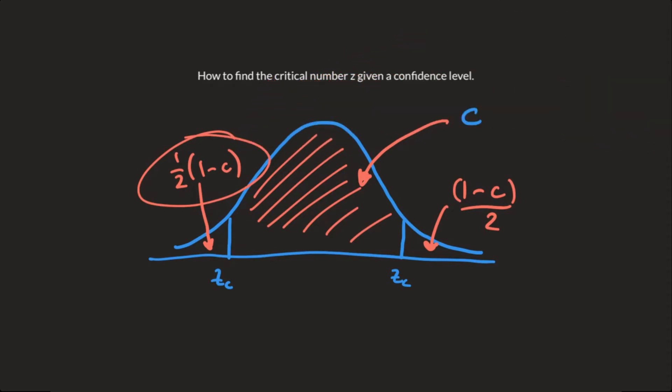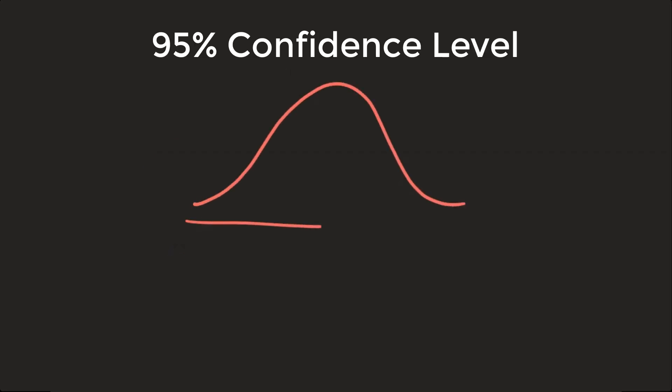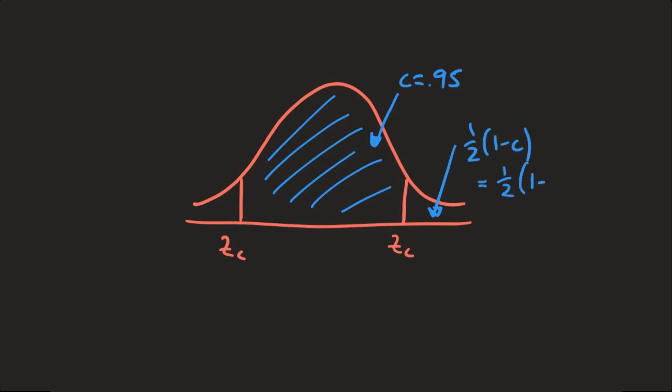Let's go ahead and try it with the 95 percent confidence level. So let's draw the normal curve again, and the two endpoints, my two critical numbers. And then inside is going to be my confidence, which in this case is going to be 0.95. So the formula of 1 minus c, that gives us 1 minus 0.95, which is 0.05, and half of that is 0.025.